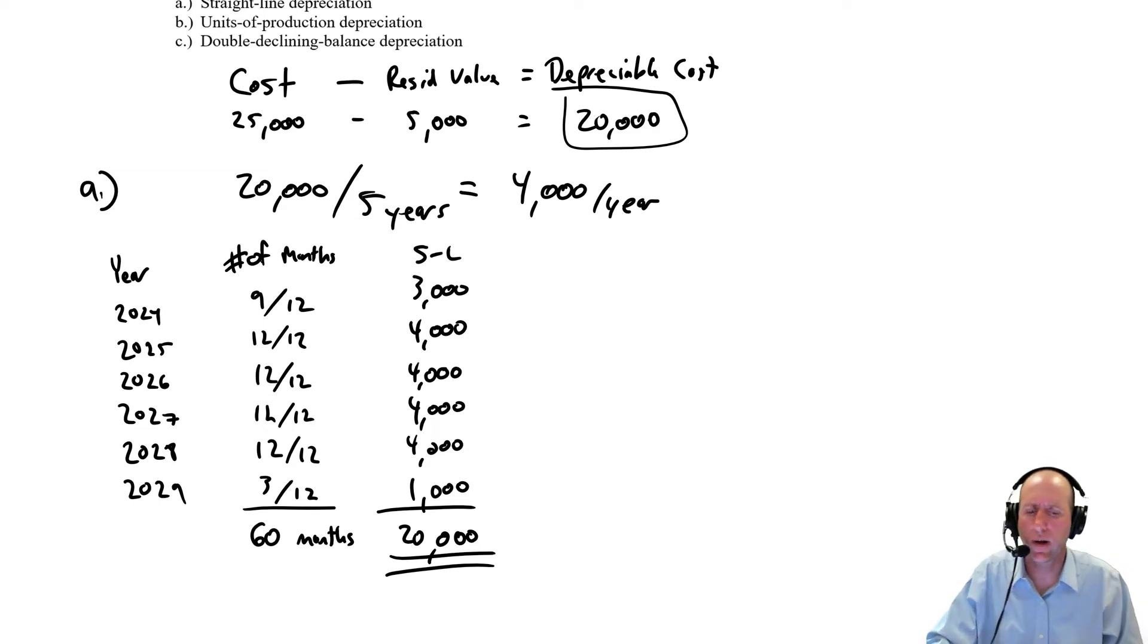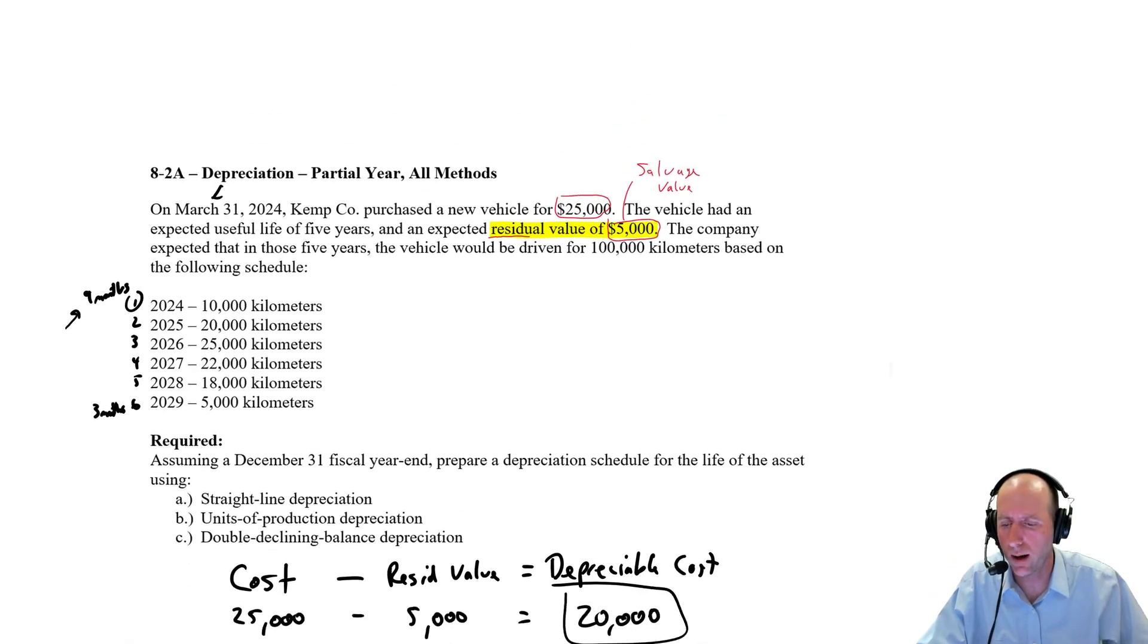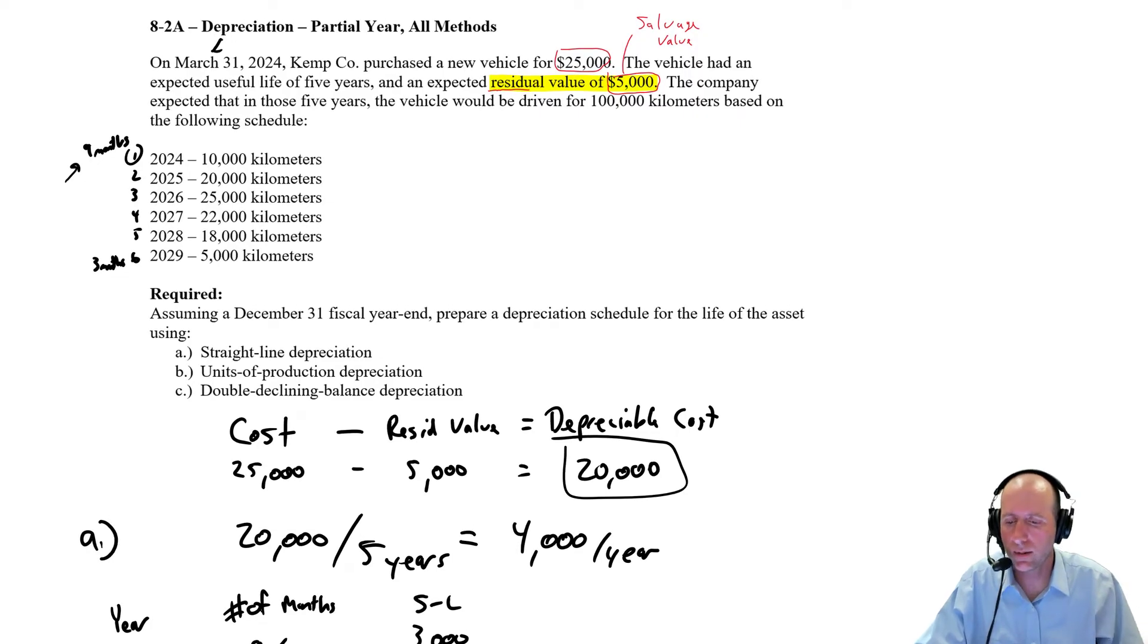Okay, we've just finished our straight-line depreciation for problem A2A. We're going to move on now, and we're going to do units of production.